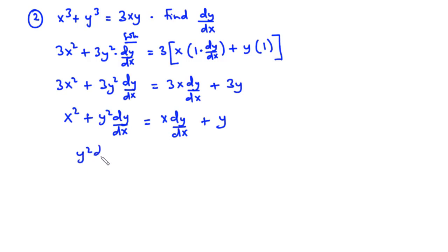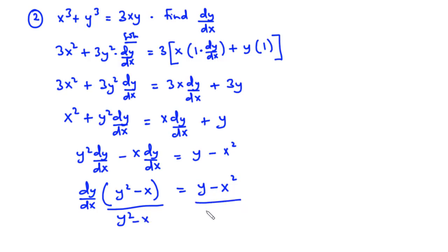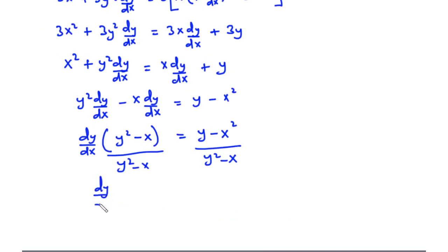We have y squared dy/dx, and we transpose x dy/dx to the left hand side, giving y squared dy/dx minus x dy/dx equals y minus x squared. We factor out dy/dx, so inside the bracket we have y squared minus x equals y minus x squared. Dividing through by y squared minus x, dy/dx equals y minus x squared over y squared minus x.